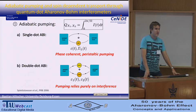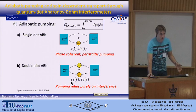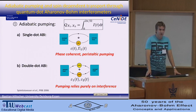The second system we are considering is an Aharonov-Bohm interferometer where a quantum dot is embedded in each of the two arms. Here our time-dependent parameters are the two mean dot levels, epsilon 1 and epsilon 2. In that case, pumping is not peristaltic, but a pure quantum mechanical effect only relying on interference.